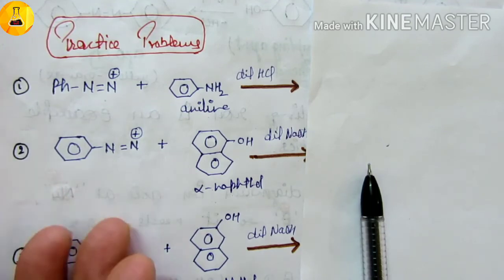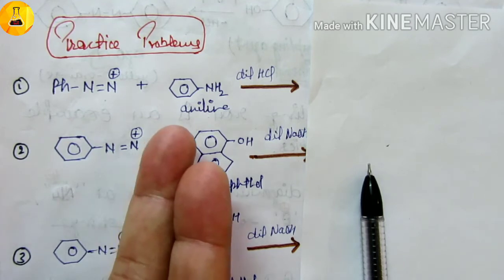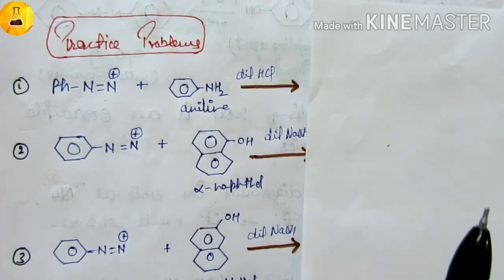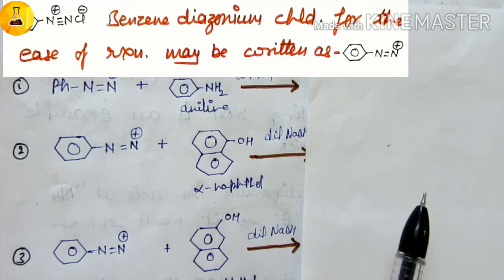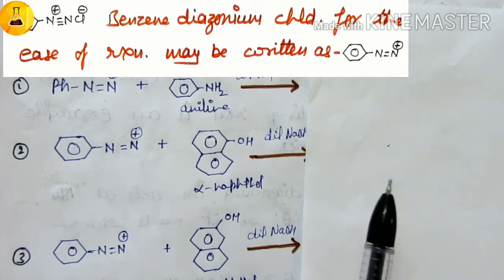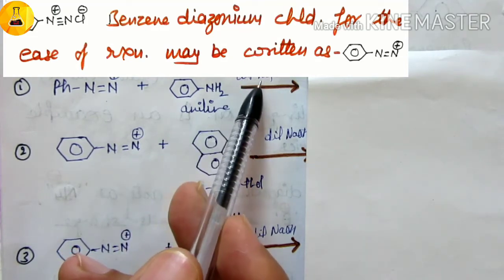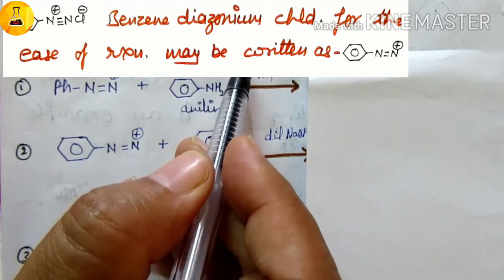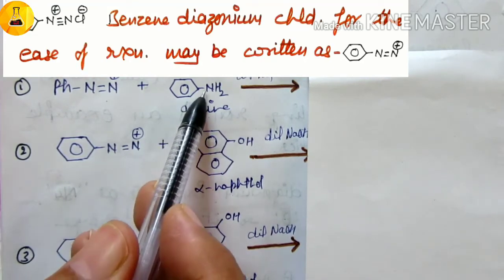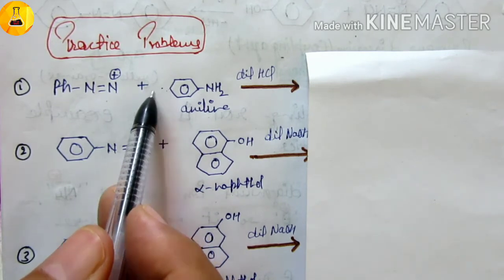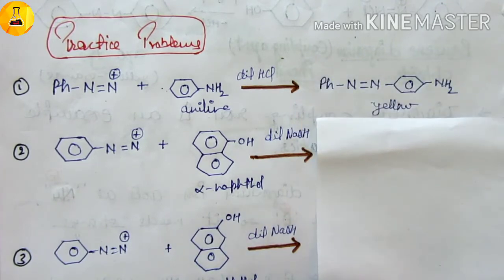Let's practice examples because exam questions come from this topic. Here we have Benzene Diazonium Chloride with different coupling agents — try to make the products yourself before looking. When the reaction is done with aniline, the medium is kept moderately acidic at pH 4–5. Aniline has an electron-donating group, so reaction occurs at the para position of aniline, giving a colored azo dye.